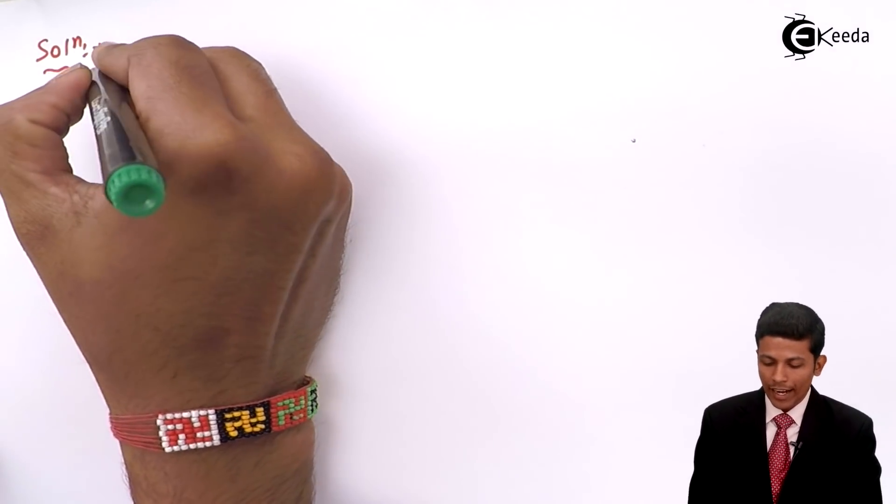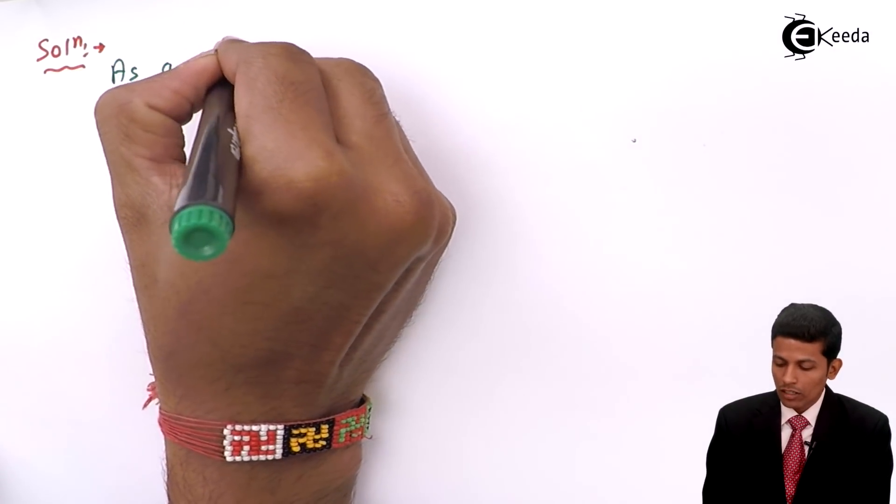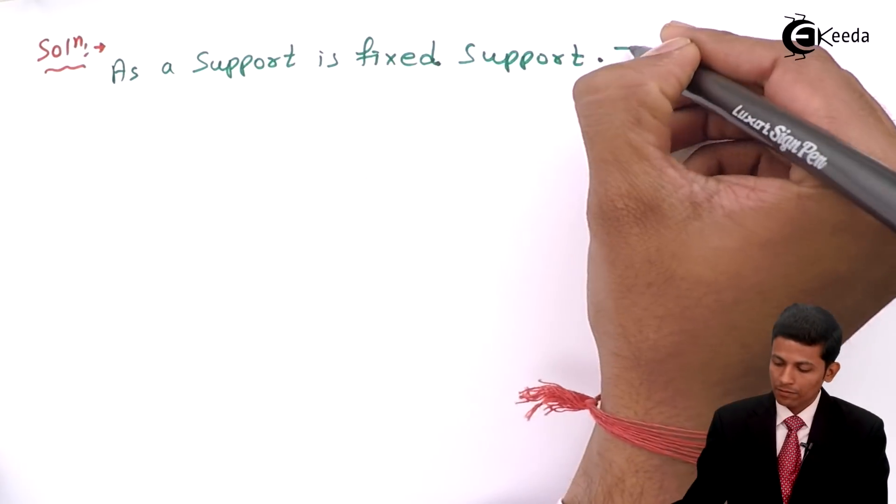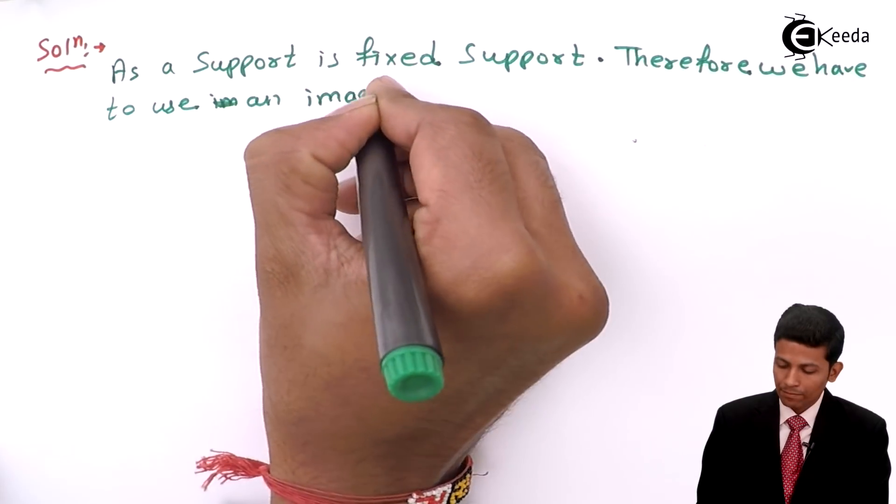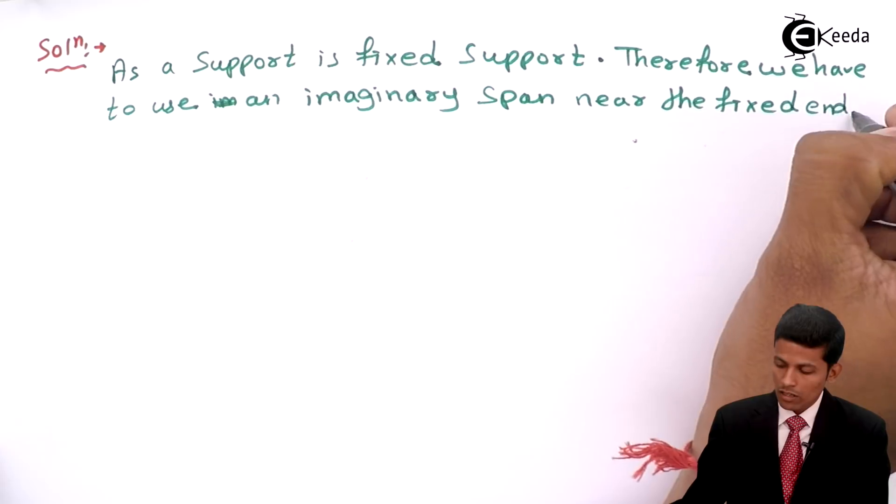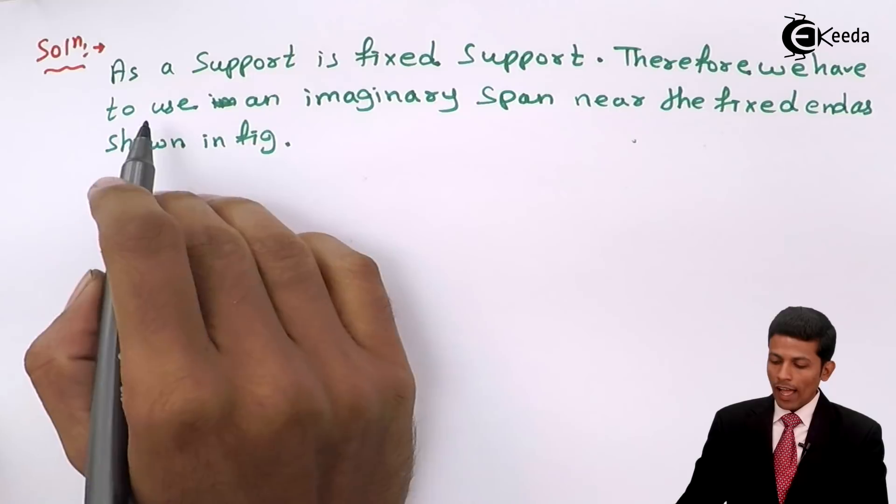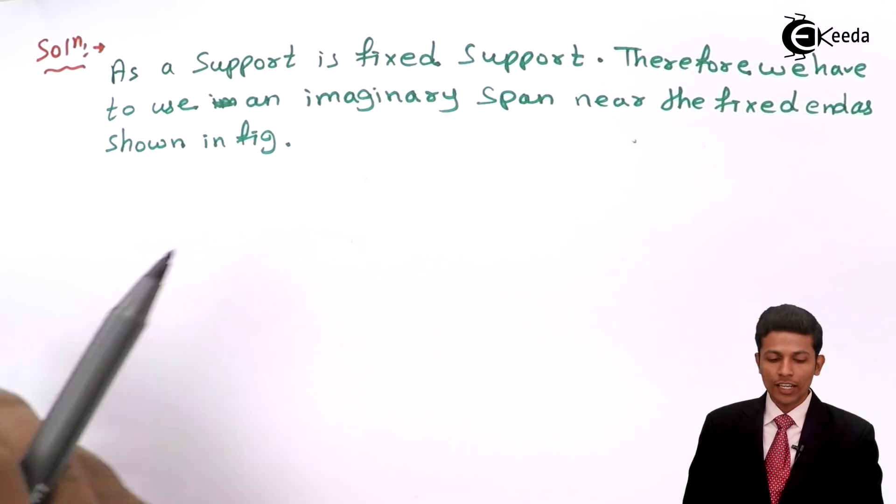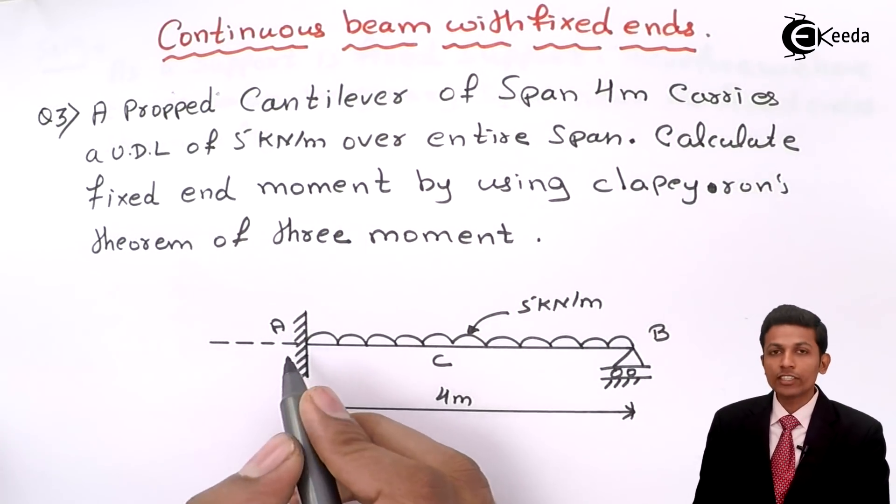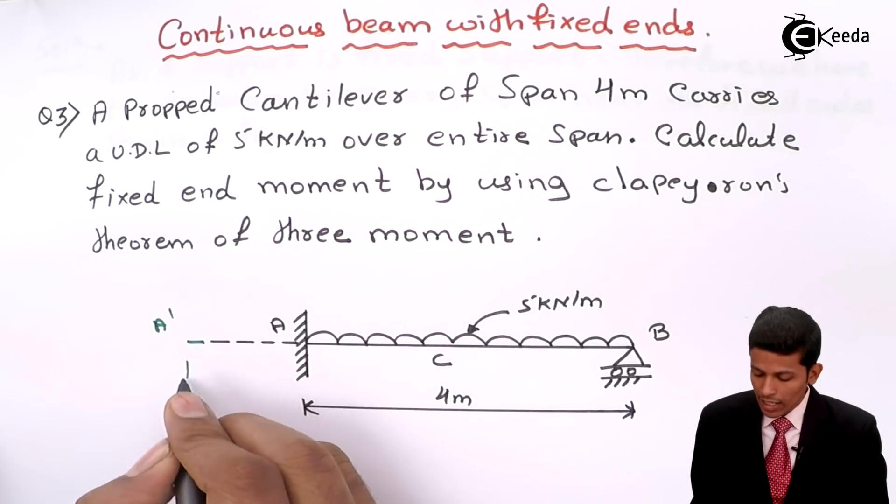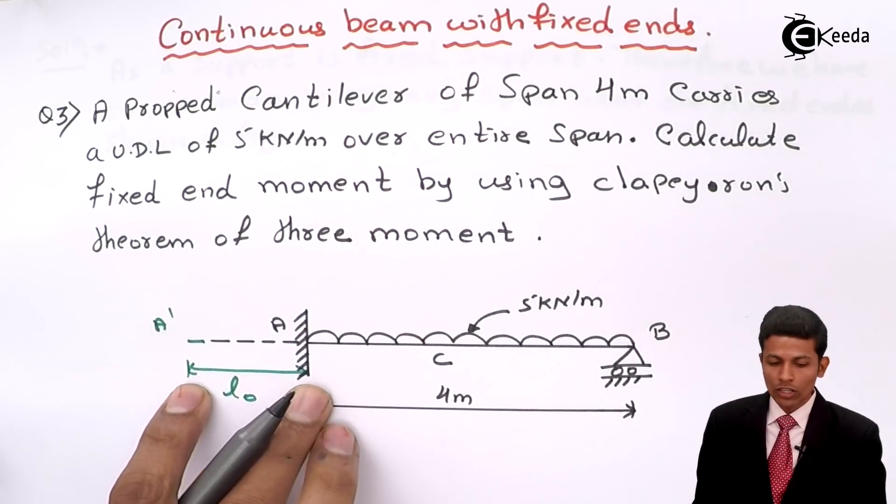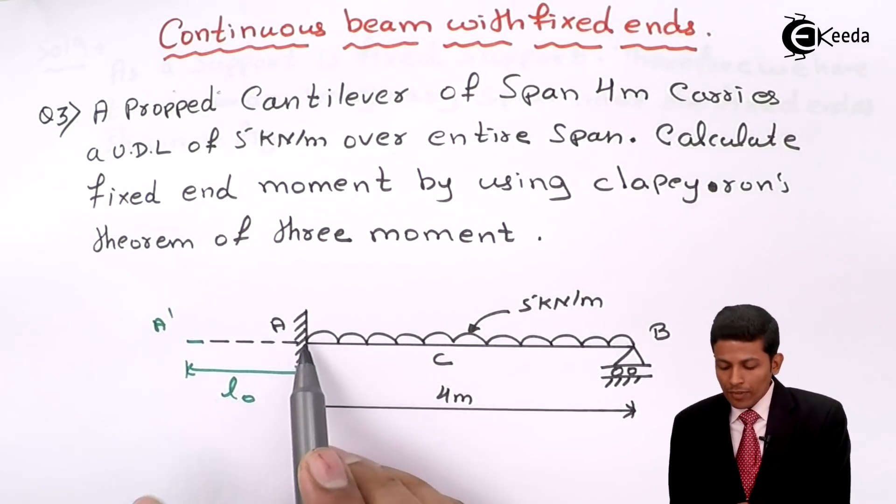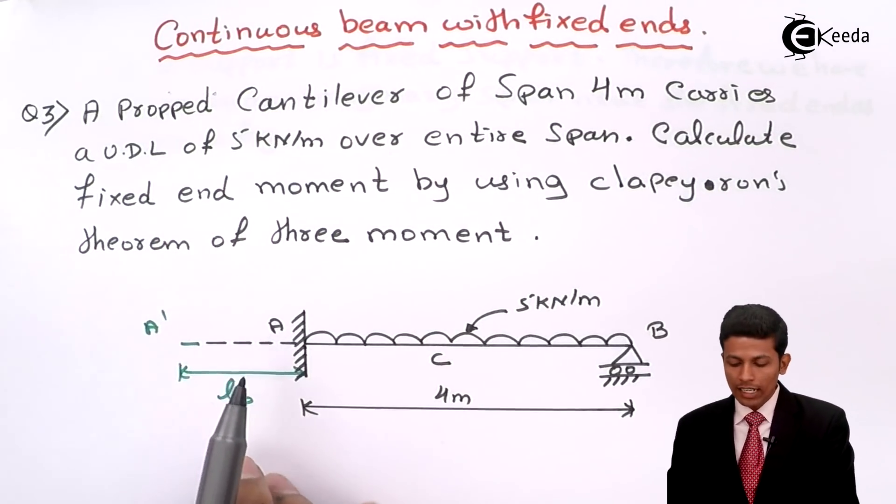You have to write one note as a support. As A support is fixed support, therefore we have to use an imaginary span near the fixed end as shown in figure. Since this is a fixed beam, we have to extend one part and name as A dash. And this distance is nothing but L0. Means L will be also L0 and extend this part. Because at A there is some moment, fixed end moment there. That's why I'm extending this part as A dash.